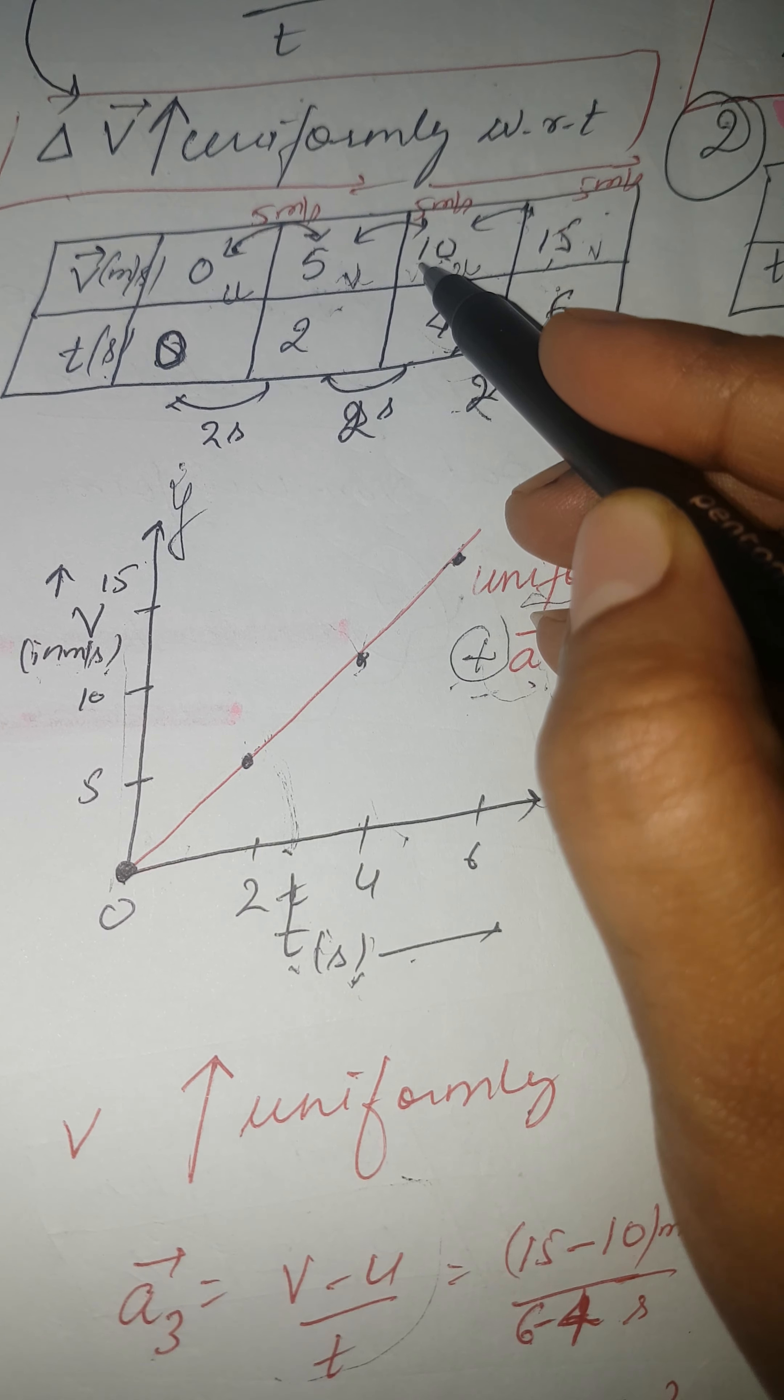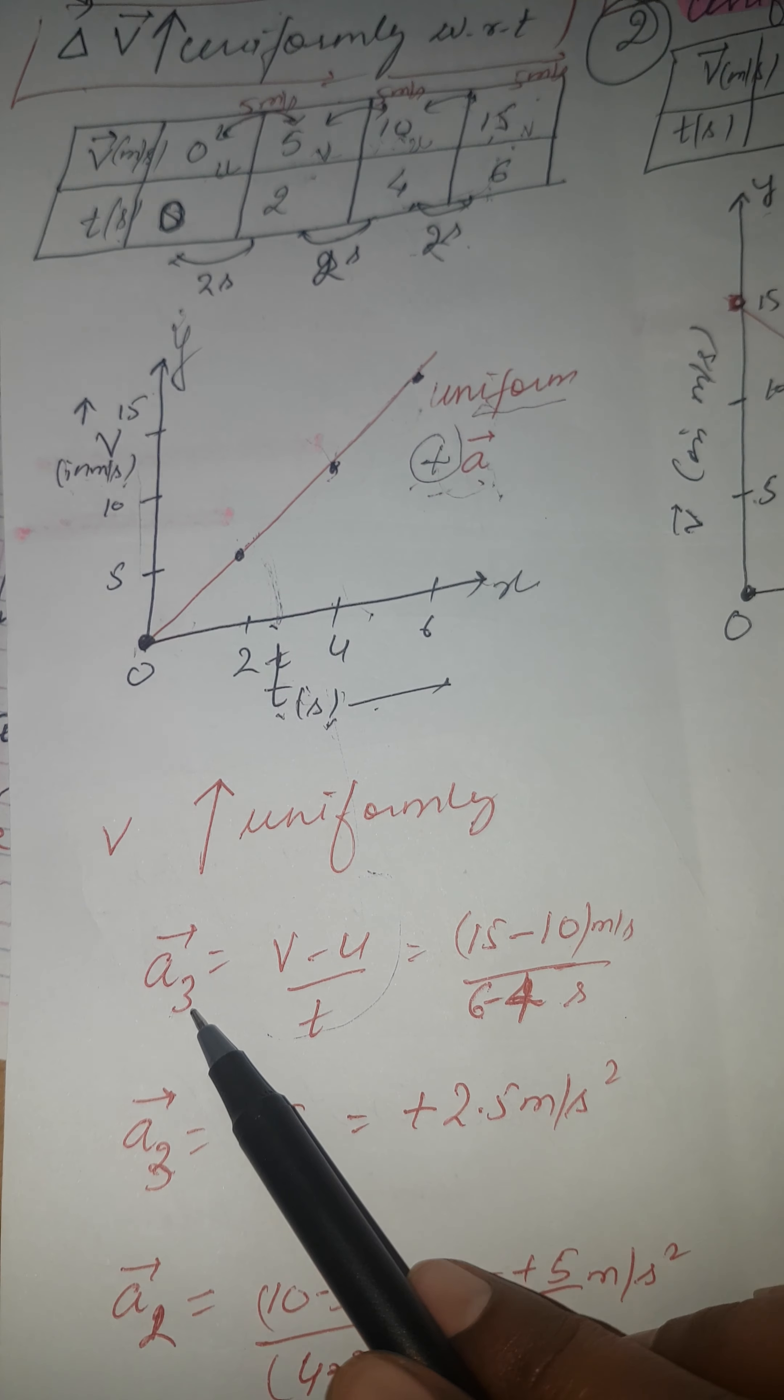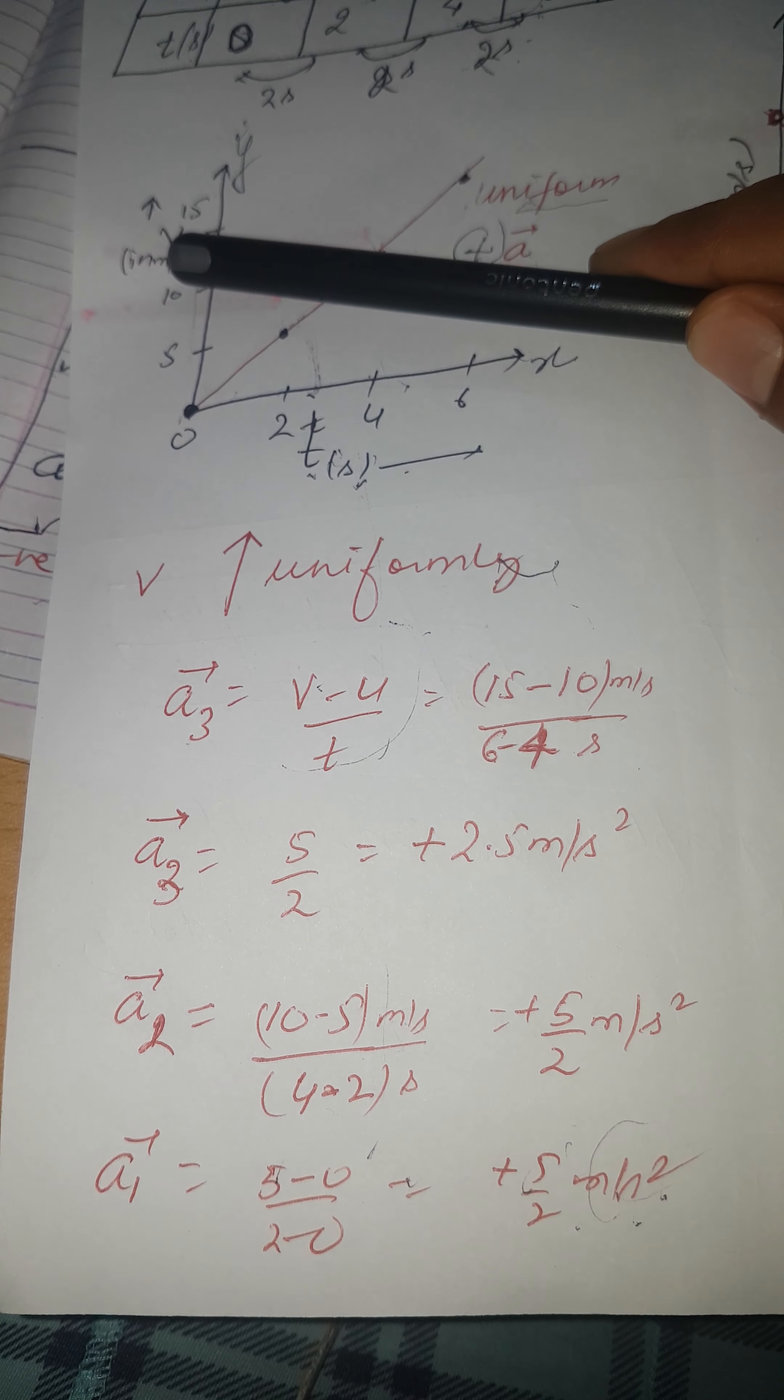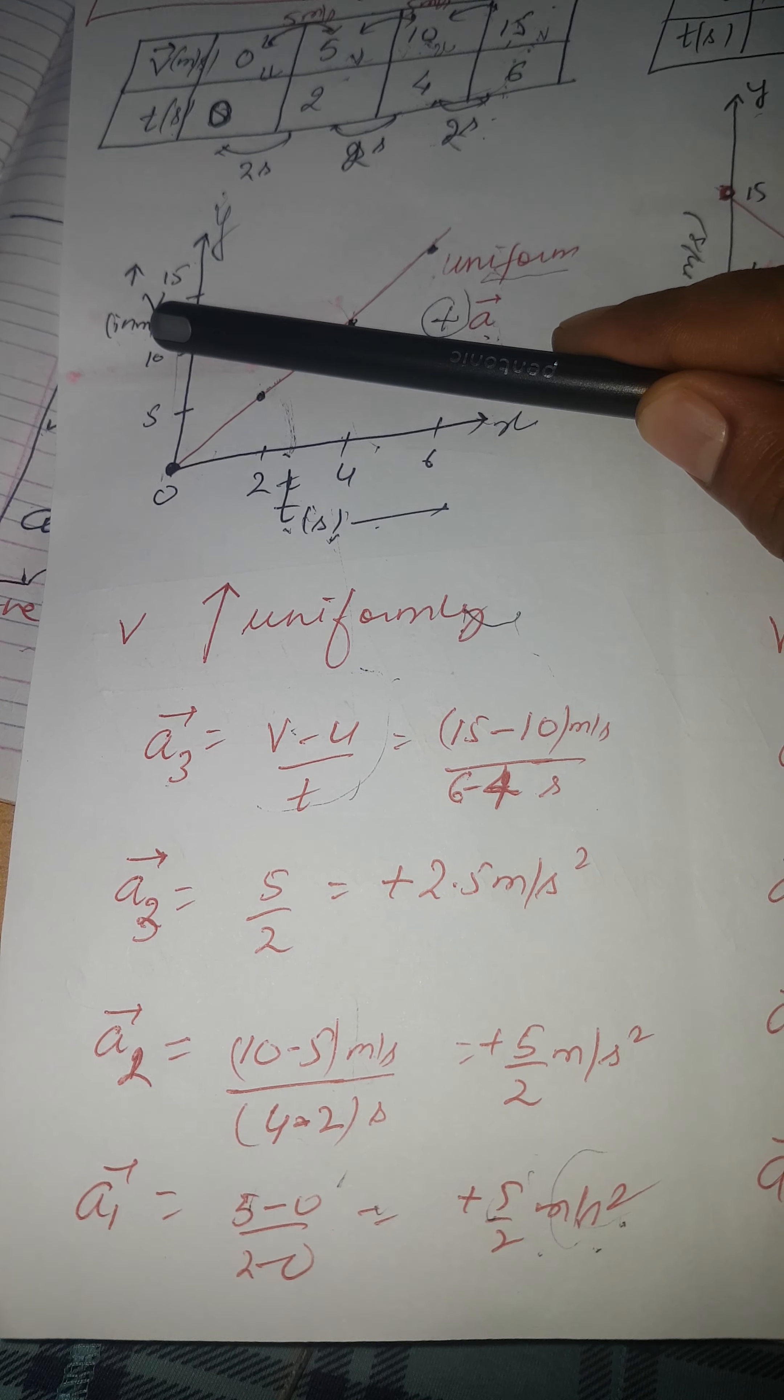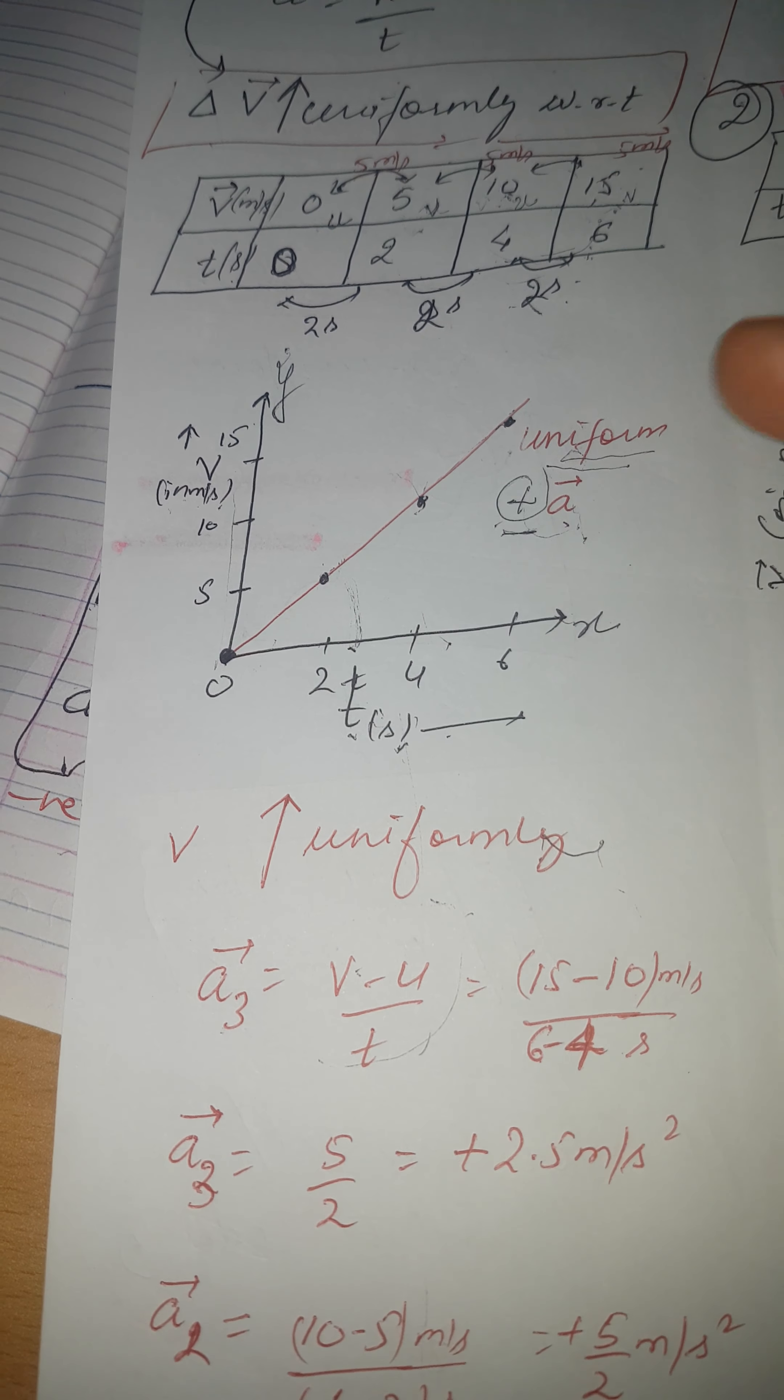When you talk about third interval, that was initial and that was final. This is how we calculate. What do we do for third acceleration? V minus U by T. V is this and U is this. Time is difference of these two intervals, which is 2 seconds. This is how we have calculated acceleration. And in all these three cases we have taken out the value of acceleration as plus 2.5 meter per second square, which is constant. Acceleration is positive because velocity is increasing, and since it is same throughout, acceleration is uniform.